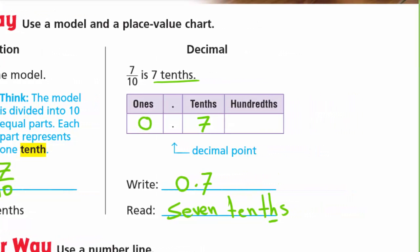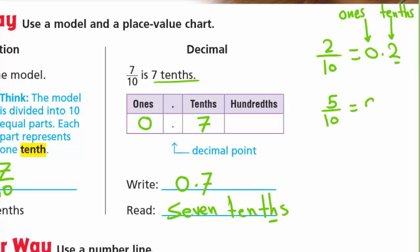So 7 tenths we can write as 0.7. For example, if we have 2 tenths, we can write it as 0.2 — we don't have any ones so we write 0, then the decimal point, then 2 in the tenths place. The place value to the right of the decimal point is tenths and to the left is ones. For 5 tenths we write 0.5.